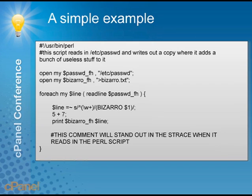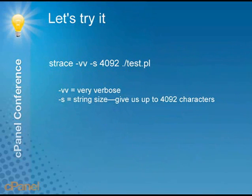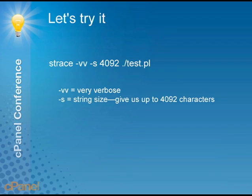You'll see it doing the replacement, and adding five plus seven for no reason whatsoever, then printing out our bizarro text file. Below that you're going to see a comment — this comment will stand out in the strace output, and you'll see why in a minute. The command to run is: strace -vv, for very verbose, then -s 4092. All that means is the length of the strings for each system call — it can be very long sometimes, so we just want to see the first 4,092 bytes — and then we execute test.pl.